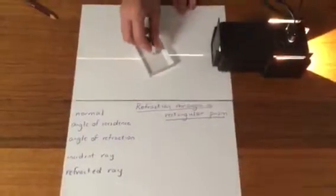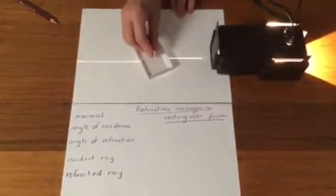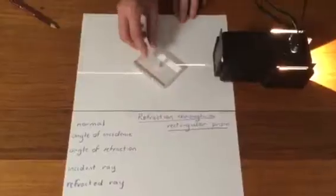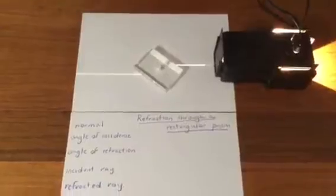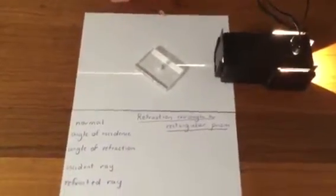Position this slab in such a way that you get a fairly acute angle. Notice we're getting reflection here but we're not interested in recording that, just the bending.